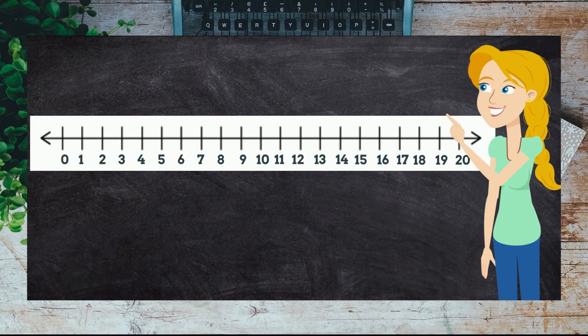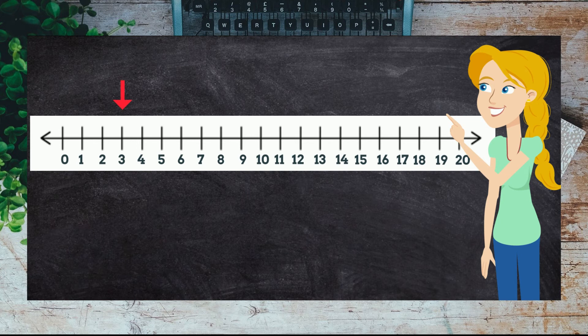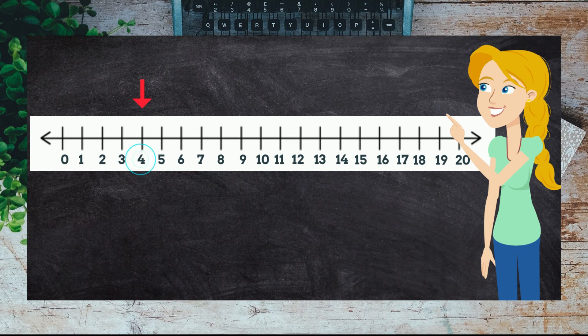Can you see the number three on this number line? Yep, that's it. Do you know what number comes after the number three? That's right. It's four.